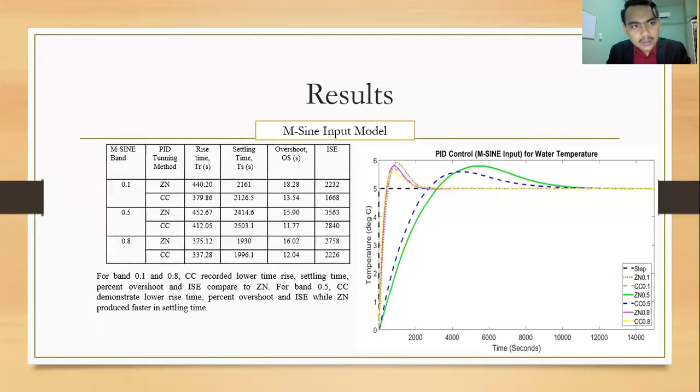The next one is the output for the input multi-sign model. As you can see, the summary of the result is tabulated on the left table and the output is on the right picture.